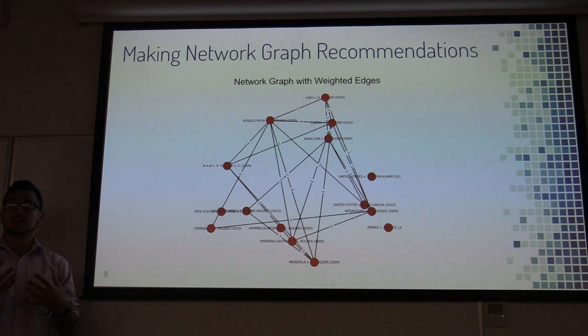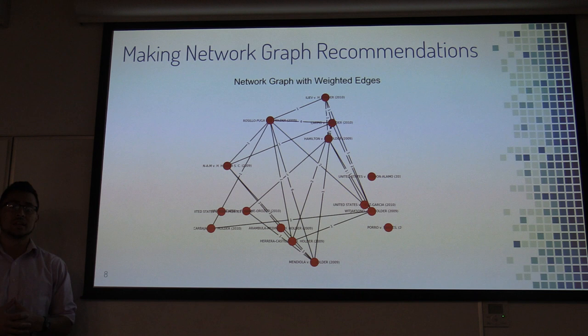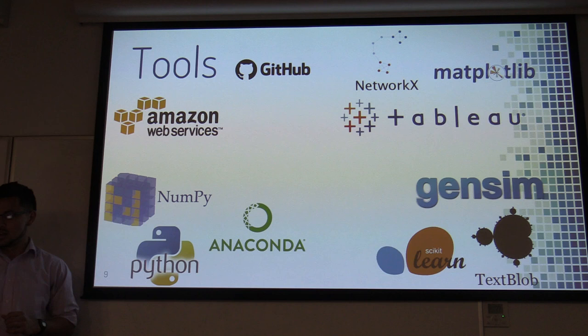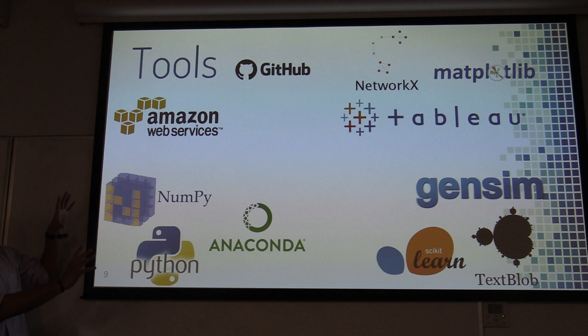Future work will include machine learning techniques that can create many different graphs and find optimal usage of those graphs — that's something my team and I are definitely working on. Here are some of the tools I used, grouped by processing and language. I heavily used sklearn, TextBlob, and Gensim — these are natural language processing tools — along with some visualization libraries and Amazon Web Services.